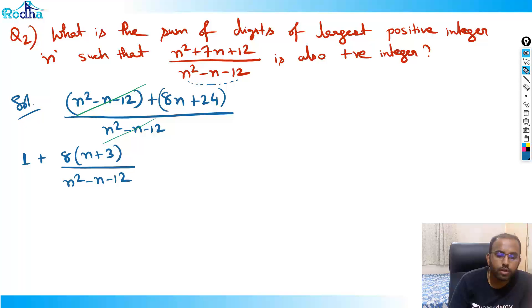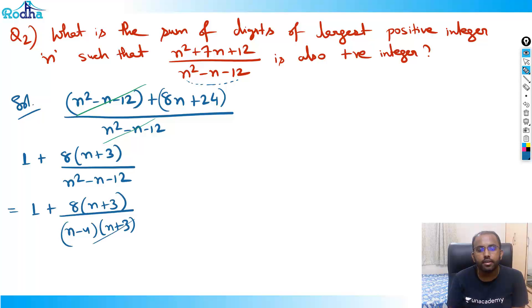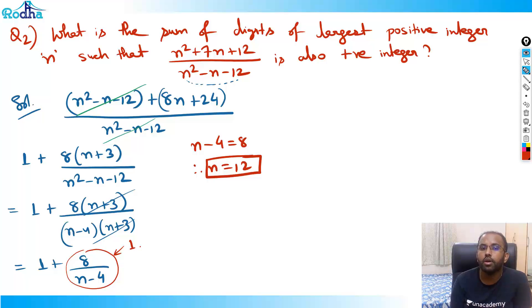What I'm left with now? I'm left with 1 + (8n + 24)/(n² - n - 12). What is n² - n - 12? If you solve this quadratic, you'll get (n-4)(n+3). So this becomes 1 + 8(n+3)/[(n-4)(n+3)]. If you cancel it, this gets cancelled. What I'm left with now? I'm left with 1 + 8/(n-4). Now what I'm looking at here is the largest positive integer n such that this is also a positive integer. That means if it is 8/(n-4), this should not be in fraction. So largest value it can take is actually 1. When will it be 1? When n-4 equals 8, that means n equals 12. That is the largest value of n. n equals 12 means I was asked sum of digits. What is my answer? My answer should be 3. 3 is the answer actually.